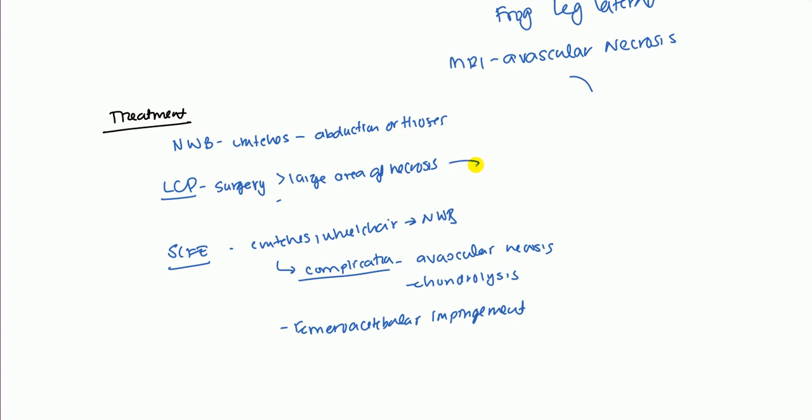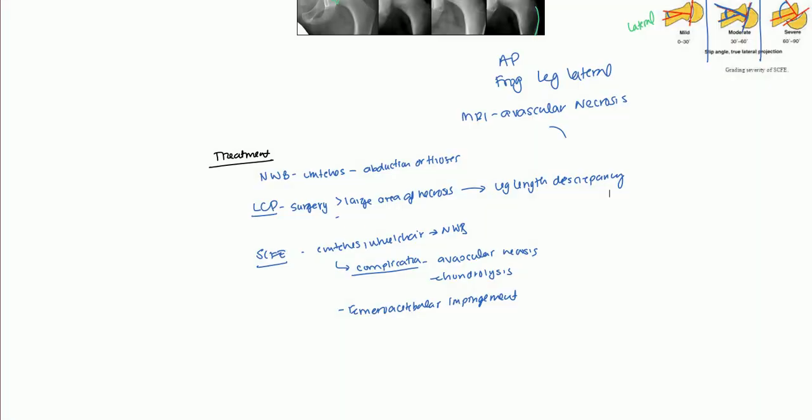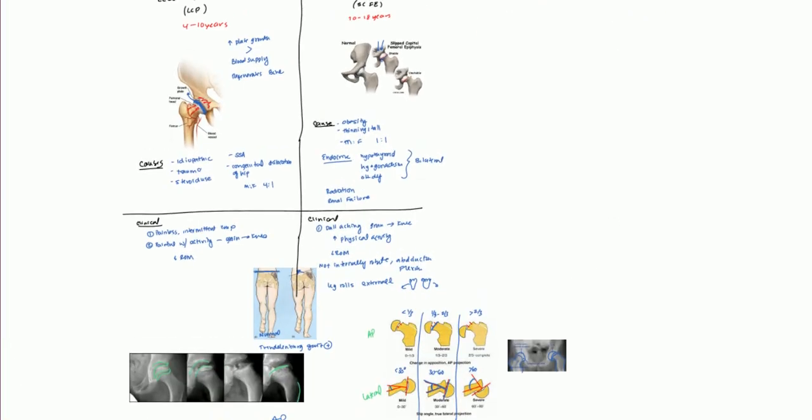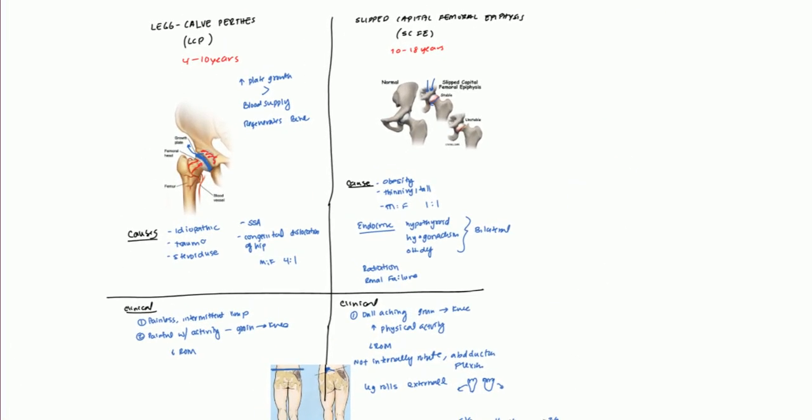With LCP, your biggest long-term complication is going to be the leg length discrepancy, and this can lead to scoliosis as the back tries to compensate by curving in the opposite direction. This was a general look at both of these conditions. Hope you guys learned a lot and I'll see you guys in my next video. Thanks.